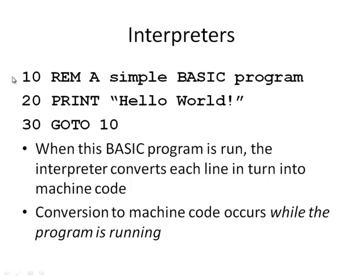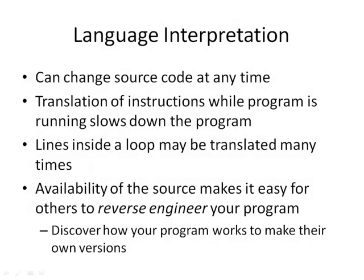What this means is that each line is converted from source code to machine code every time that program line is encountered as the program runs. It will skip line 10 because it's a remark, then convert line 20 into machine code and print 'hello world', then convert the goto statement. Even though we're back at a line we've already run and already converted to machine code before, we're going to convert it to machine code again before operating on it. The conversion to machine code occurs while the program is running with an interpreter.